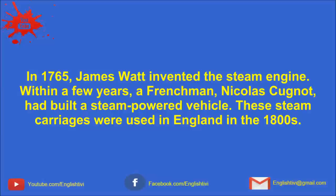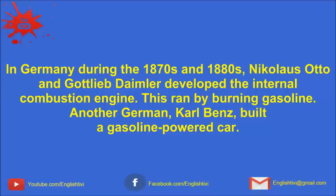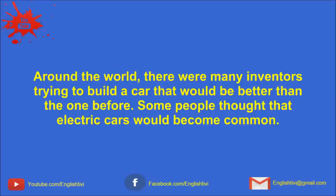These steam carriages were used in England in the 1800s, but they were big and slow. They looked like a train without the tracks. Most people preferred to travel by train. In Germany, during the 1870s and 1880s, Nikolaus Otto and Gottlieb Daimler developed the internal combustion engine. This ran by burning gasoline. Another German, Karl Benz, built a gasoline-powered car. Around the world, there were many inventors trying to build a car that would be better than the one before.